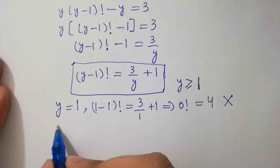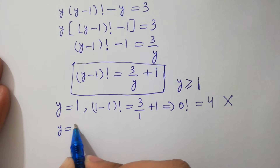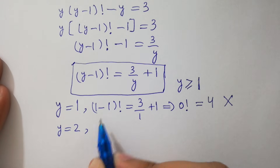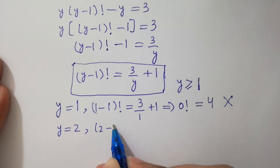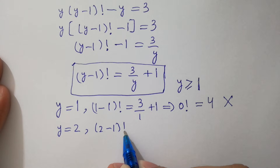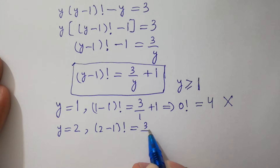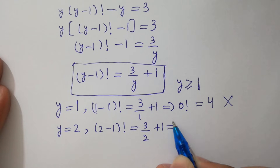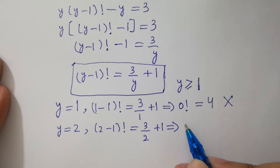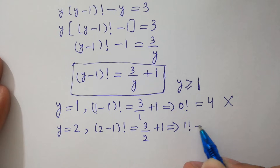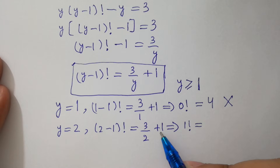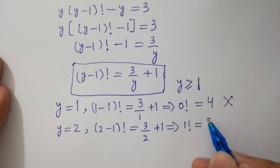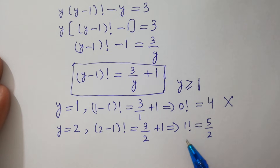If y equals 2: (2 minus 1) factorial equals 3 over 2 plus 1. That gives 1 factorial equals 3 over 2 plus 1 equals 5 over 2. But 1 factorial equals 1, and 1 does not equal 5 over 2. So y equals 2 is also not possible.